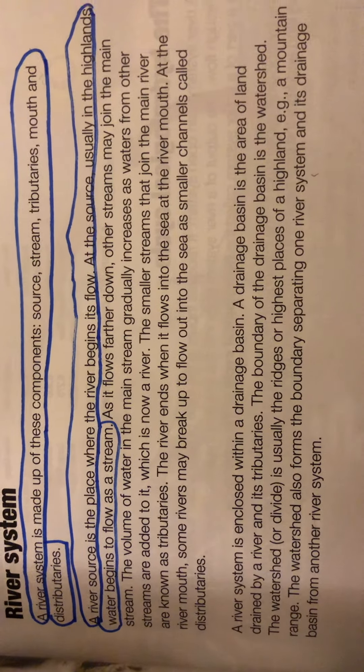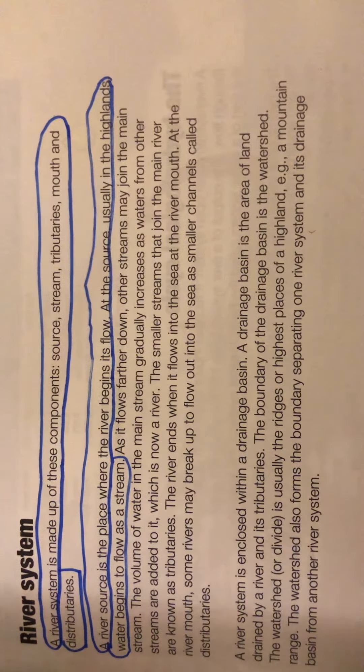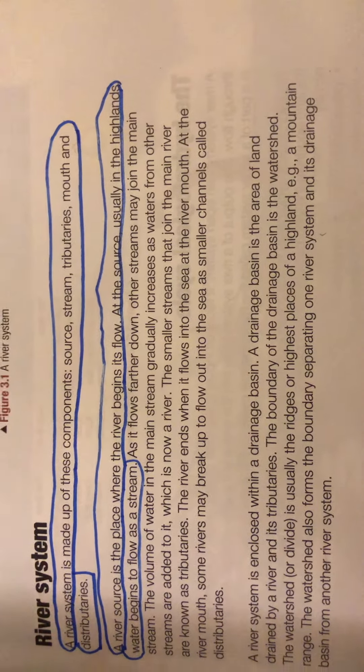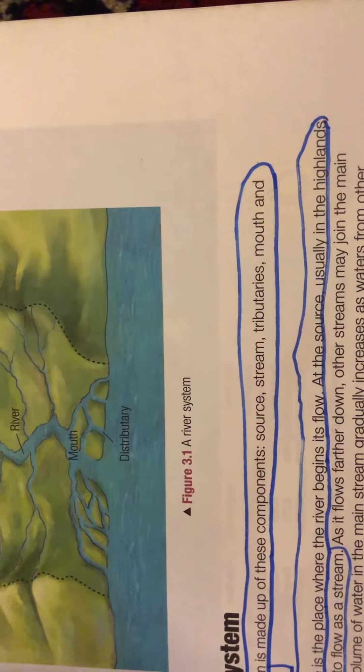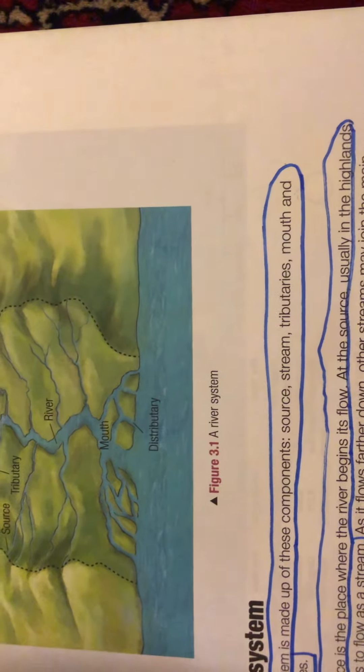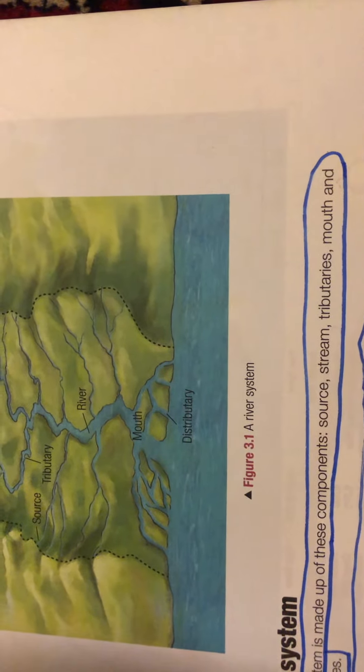At the river mouth, some rivers may break up to flow out into the sea as smaller channels called distributaries. As the water comes from the mouth, it may fill up with distributaries, flowing out into the sea.